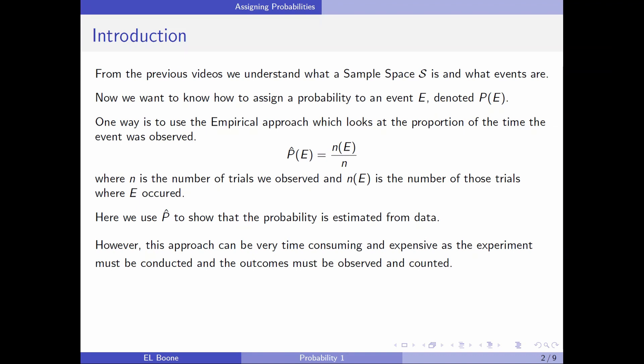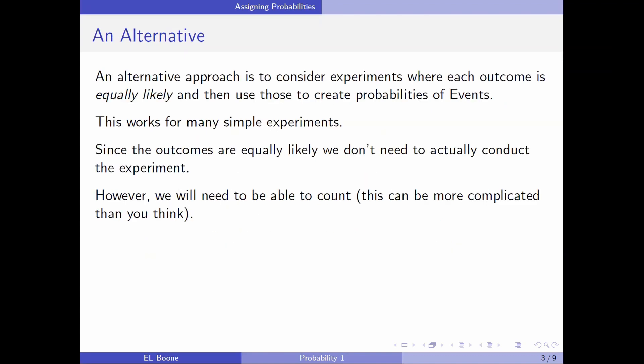In this experiment, we have to observe things and count them. So the key is you have to observe. Now, what if we could do an alternative to it? An alternative approach is to consider experiments where each outcome is equally likely and then use that property to create the probabilities of events. This works for many simple experiments, and it turns out that you can turn them into more complicated ones. Since the outcomes are equally likely, we don't need to actually conduct the experiment. We're going to assume that they're equally likely. That way we can get around actually having to perform the experiment at all.